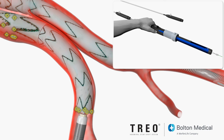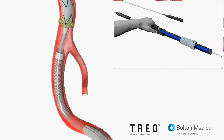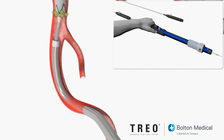Completely retract the leg extension sheath until the leg extension stent graft is completely deployed. Observe the distal markers on the leg extension to ensure the sheath clears both.